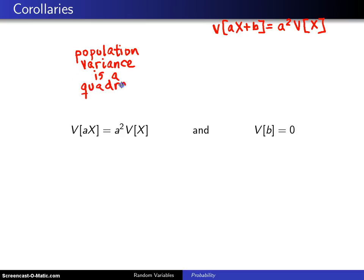Just like the expected value was a linear operator, the variance is a quadratic operator. Constants can come out front squared.